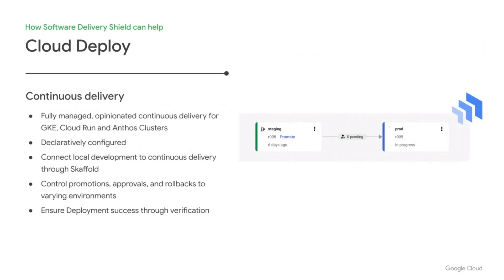Finally, Cloud Deploy is Google Cloud's solution for continuous delivery. It supports deployment to multiple runtimes, including GKE and Cloud Run. Like Cloud Build, Cloud Deploy is fully managed and takes the toil out of managing CI/CD infrastructure. With Cloud Deploy, you can manage releases declaratively as code, you can promote releases to various environments, and you have tight control over approvals and rollbacks. You can also use Cloud Deploy to verify that releases were successful after the fact.